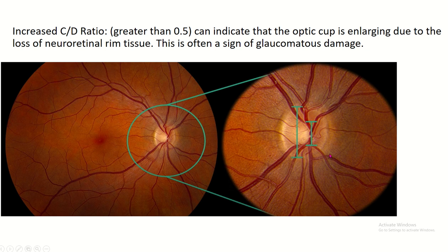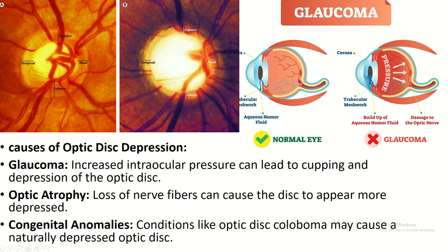An increased optic cup to disc ratio greater than 0.5 can indicate that the optic cup is enlarging due to loss of neuroretinal rim tissue. This is often a sign of glaucomatous damage. In glaucoma, intraocular pressure is increased, compressing the retina and increasing the cupping of the optic disc. Other causes of optic disc deep depression include optic atrophy and congenital anomalies such as optic disc coloboma.